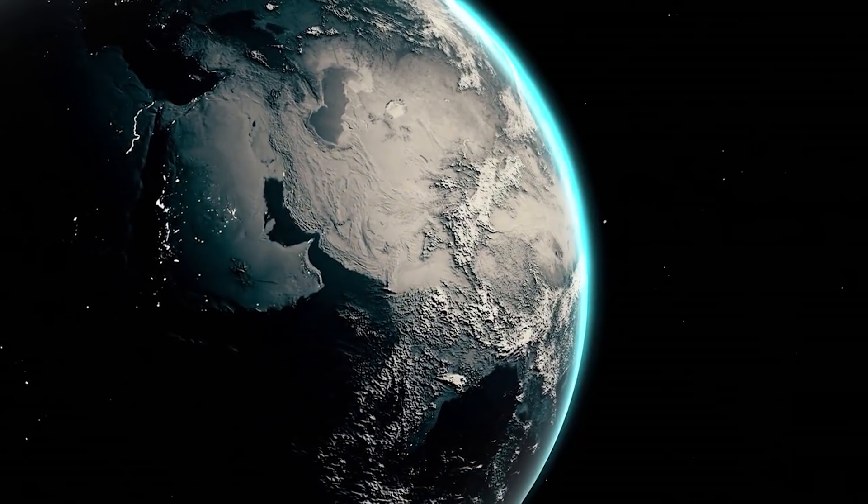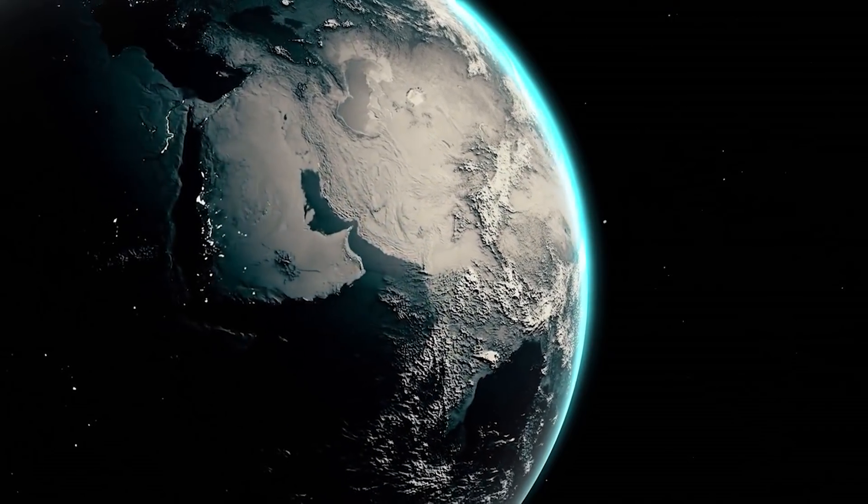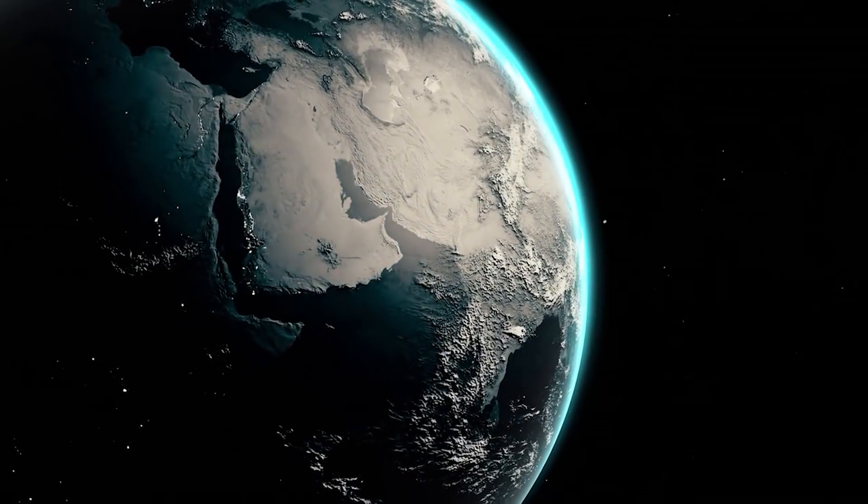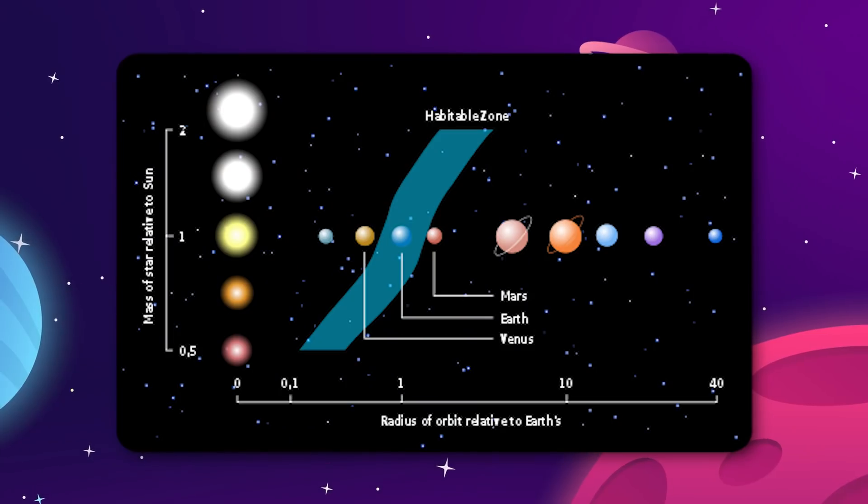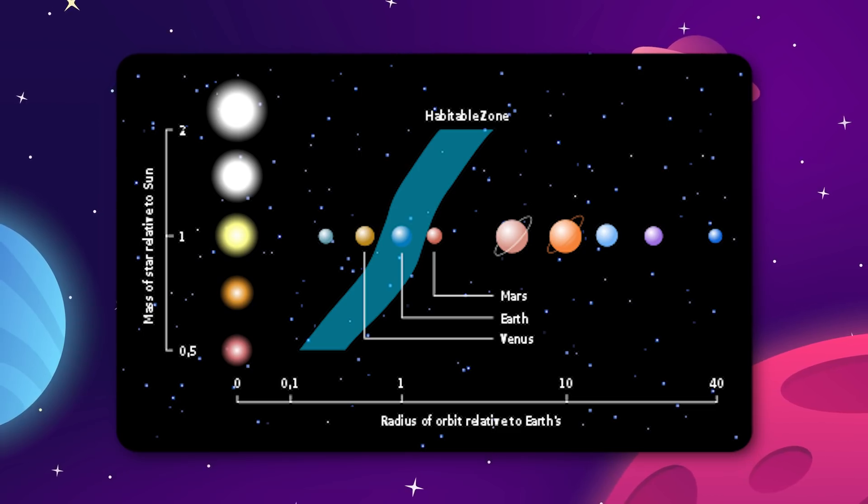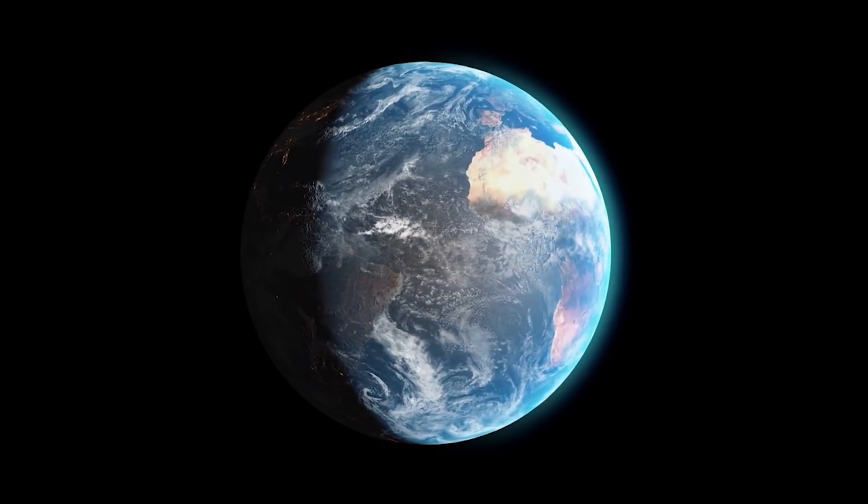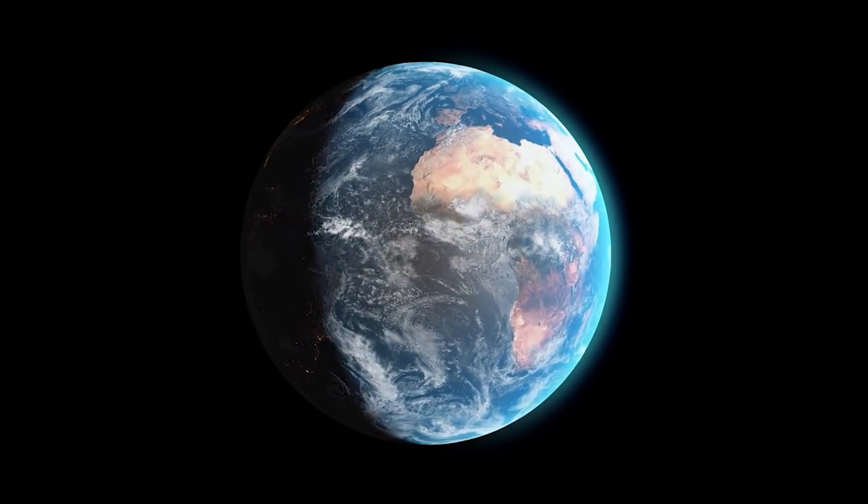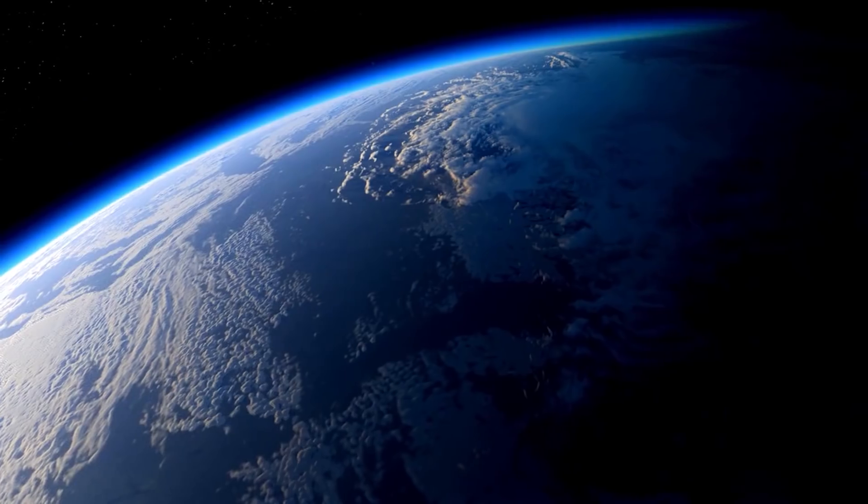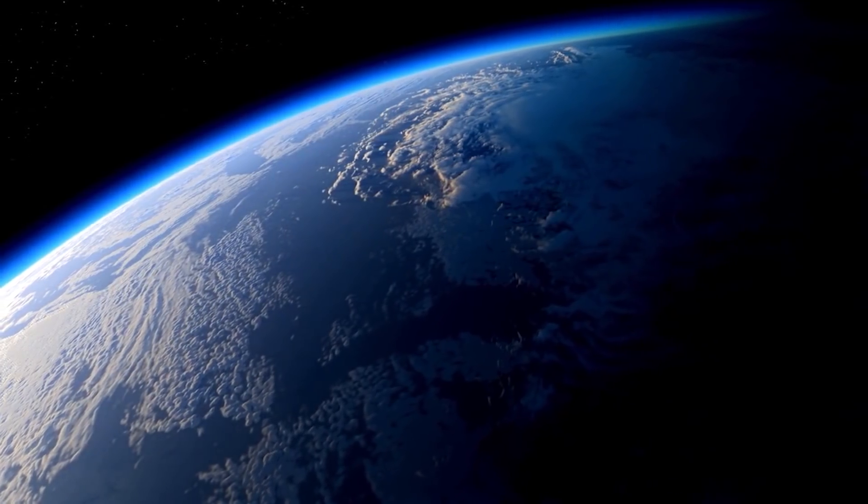We know what the Goldilocks zone in our solar system looks like. Earth is the only planet that is inside it right now, but we also know that it's a variable state as well, because Mars used to be in the Goldilocks zone at some point in the past 4 billion years, but now obviously it isn't. And for the first billion years or so of its life, the Earth was not in the Goldilocks zone, but now it is.